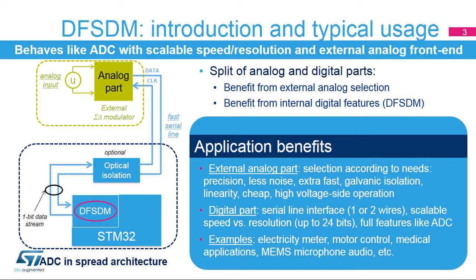The analog part provides digitized data for the DF-SDM. The digital part, represented by the DF-SDM peripheral, processes digital signals from external data. Therefore, it offers a scalable ratio solution between speed and resolution, but also analog functionality integrated in a standard built-in ADC.